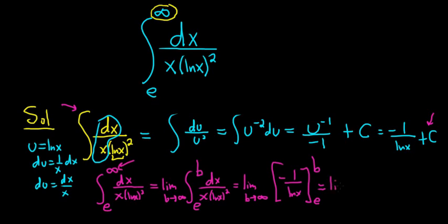So you plug in the b. So it will be negative 1 over ln b minus and then you plug in the e. So minus negative 1 over ln e.